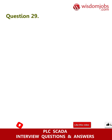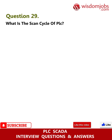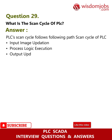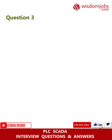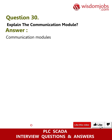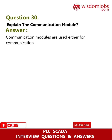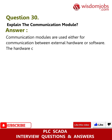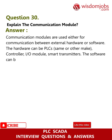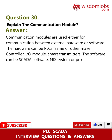Question 29: What is the scan cycle of a PLC? Answer: The PLC scan cycle follows the following path — Input image update, Process logic execution, Output update. Question 30: Explain the communication module. Answer: Communication modules are used for communication between external hardware or software. The hardware can be PLCs (same or other make), controllers, IO modules, or smart transmitters. The software can be SCADA software, MIS systems, or programming software.